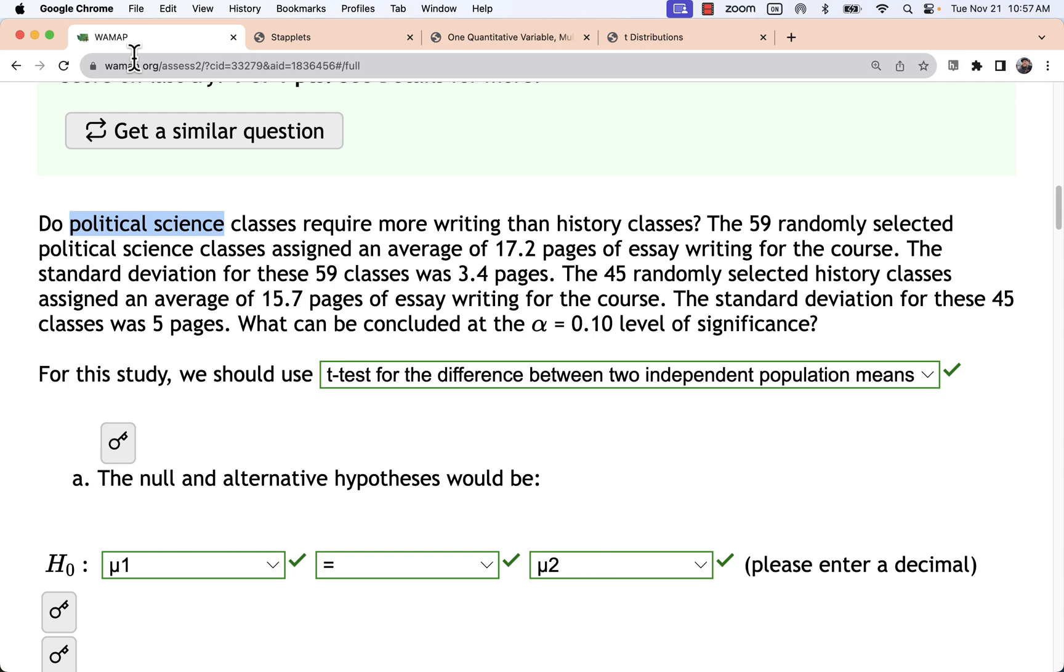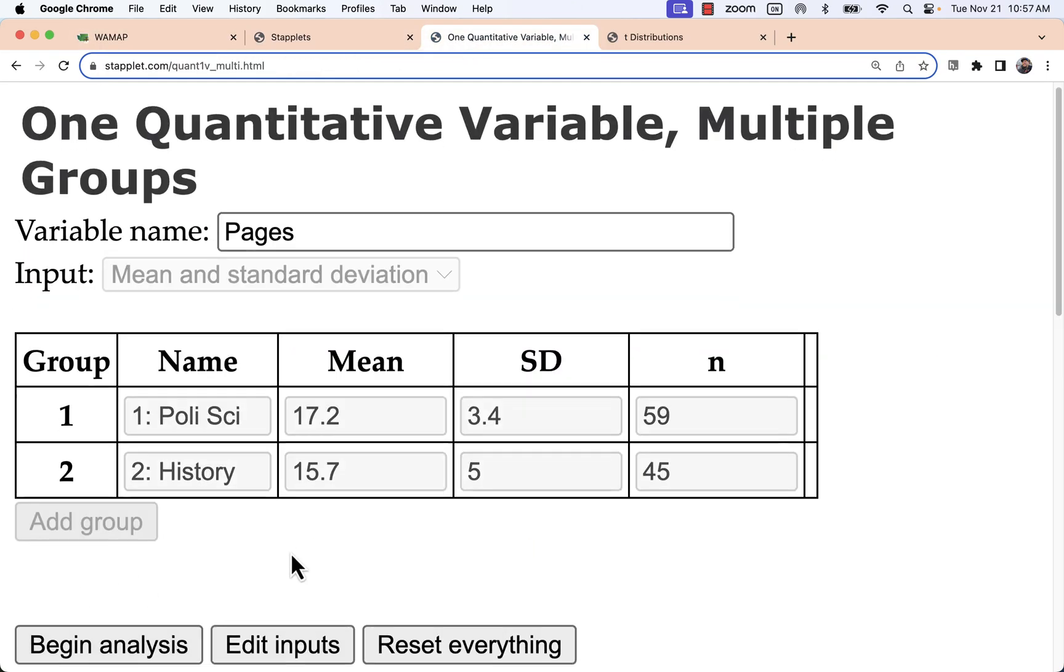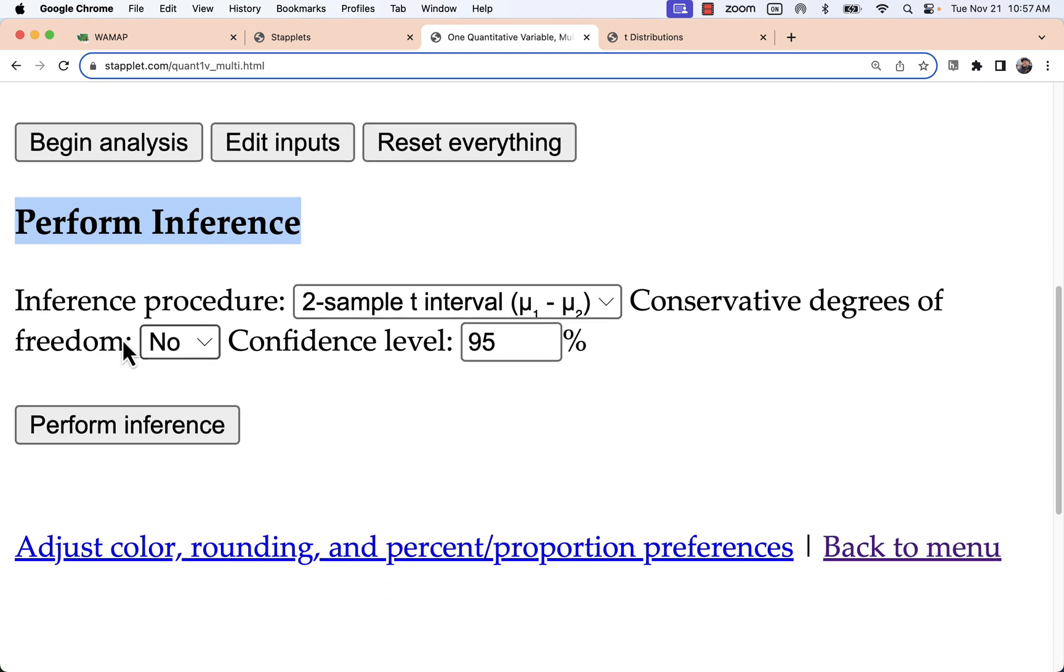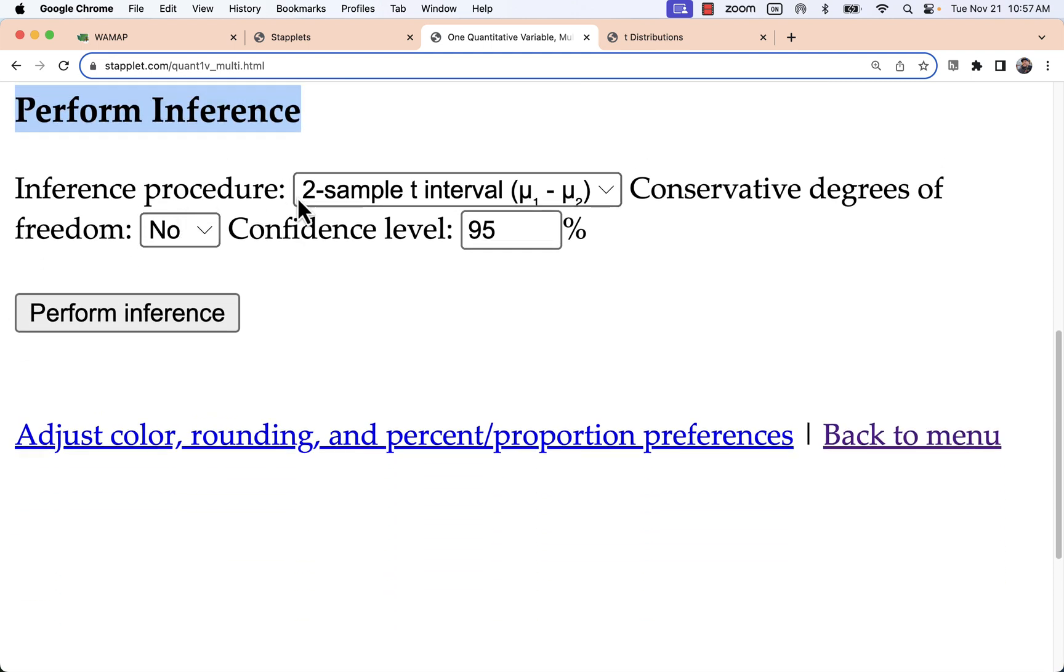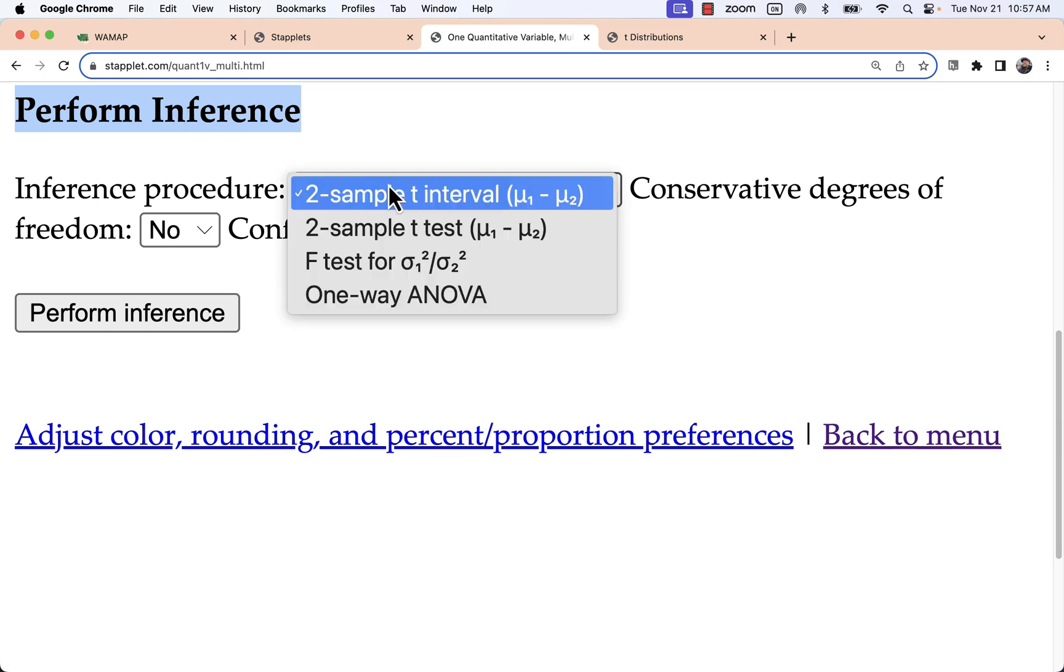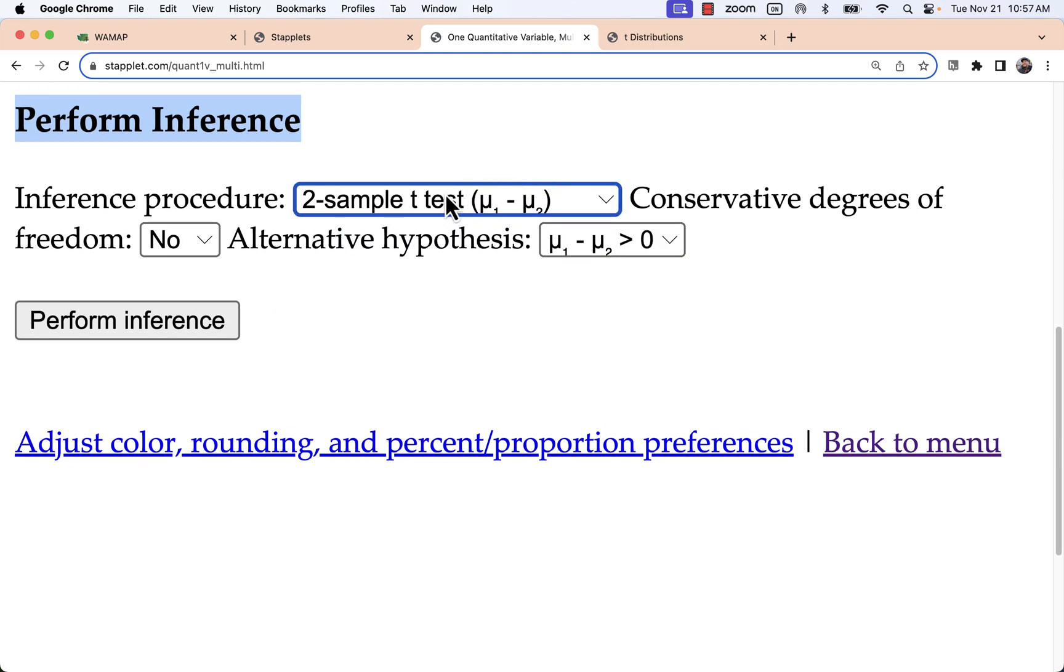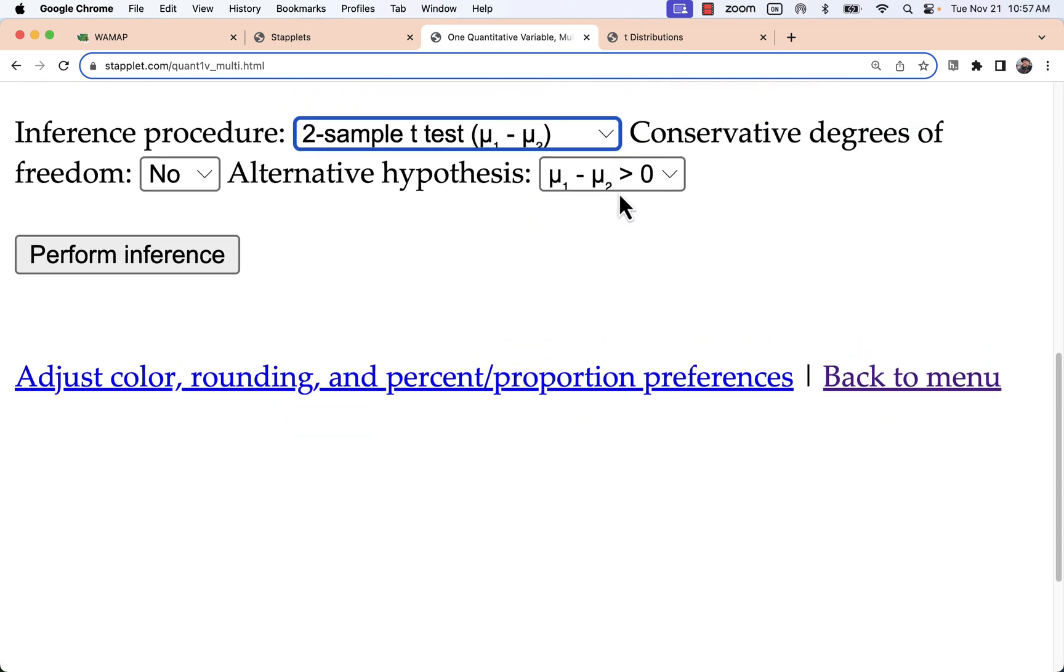Once I have that all added in from the problem, I can run my analysis. If it's an actual set of raw data, I'll get some summary stats and graphs. Here I'm just going to get inference. But you'll have to scroll all the way to the bottom if you enter raw data to find this section. And we can do an interval for the difference, or typically we'll just do a test. Intervals are a little bit rarer in this situation.